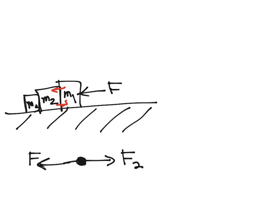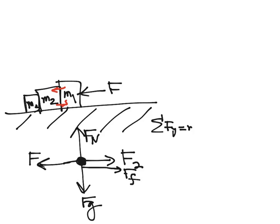I'm going to call that F2. I have some friction, which has to be opposite the direction of movement, so I have FF, and then, of course, I have FG, and FN. I know that FN equals FG, because we have up minus down, so FN minus MG is equal to 0, FN equals M1 G.